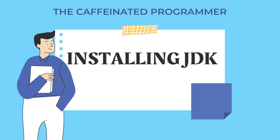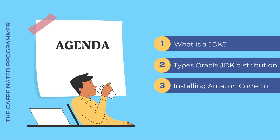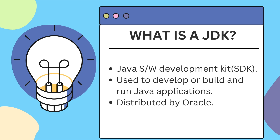Hello friends, welcome back. In today's video we'll be talking about JDK and how to install one onto our systems. The agenda for today's video is: we will look at what is a JDK, types of Oracle JDK distribution, and how to install Amazon Corretto onto our system.